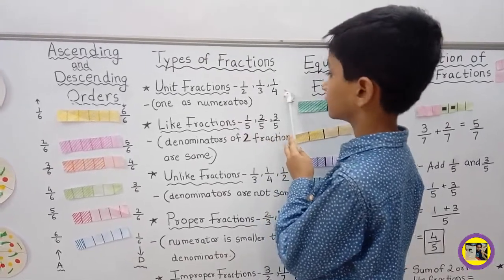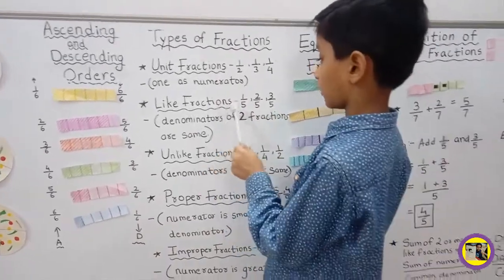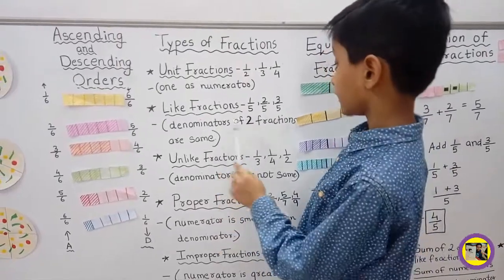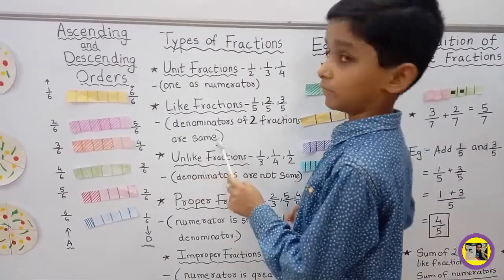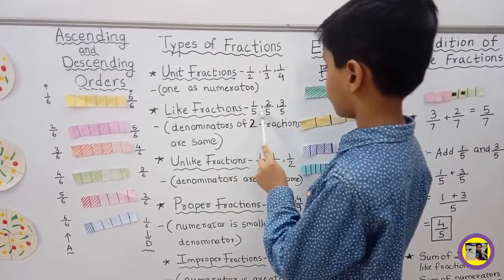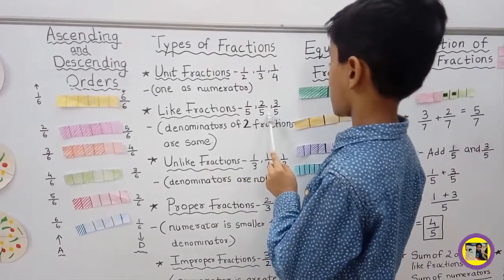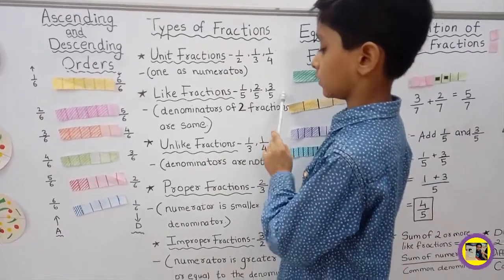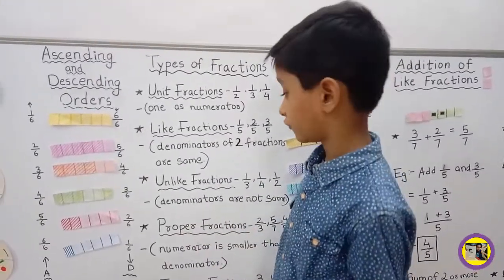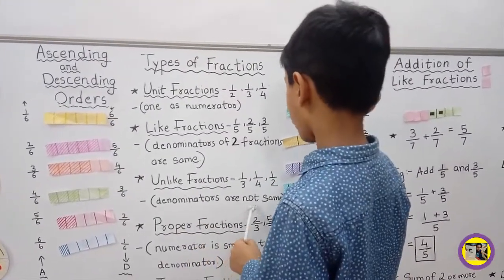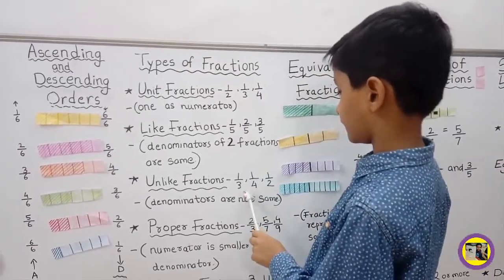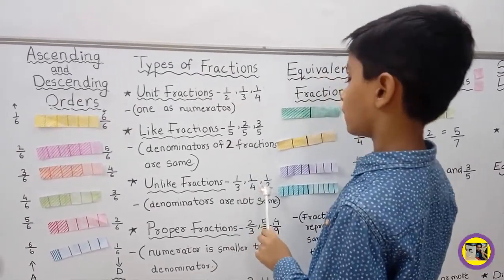Like Fraction: In like fractions, the denominators of the fractions are the same. For example, 1 upon 5, 2 upon 5, 3 upon 5. Unlike Fraction: In unlike fractions, the denominators are not the same. For example, 1 upon 3, 1 upon 4, 1 upon 2.